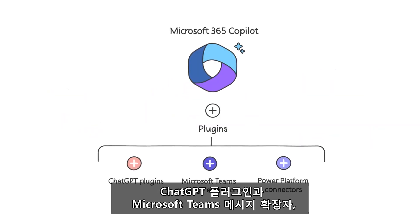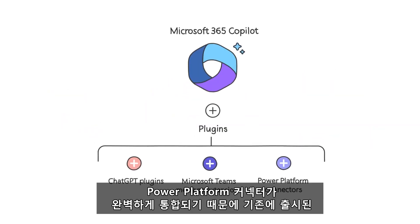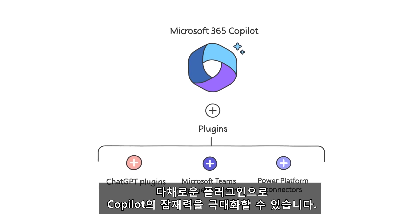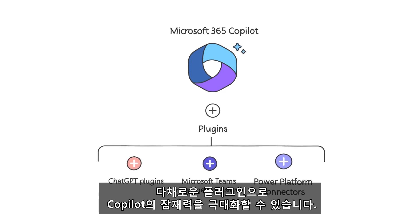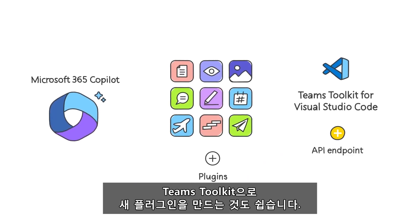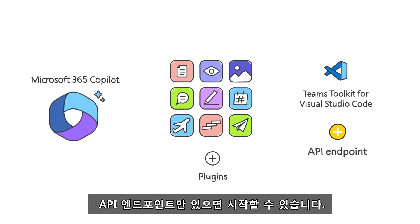Unlock the potential of Copilot with a rich ecosystem of plugins already available, thanks to the seamless integration of ChatGPT plugins, Microsoft Teams message extensions, and Power Platform connectors. And with the Teams toolkit, building a new plugin is easy — all you need is an API endpoint to get started.